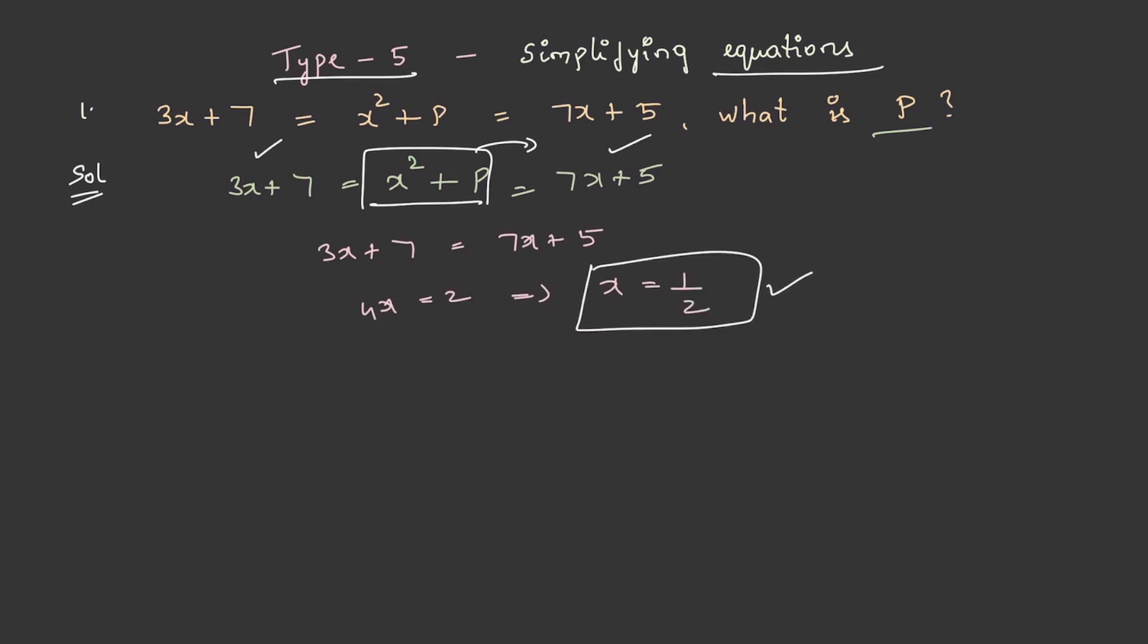Having found the value of x, let us substitute it into the equation to get the value of p. 3x + 7 = x² + p = 7x + 5 is the given equation. On substituting the value of x,